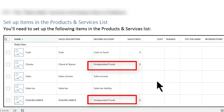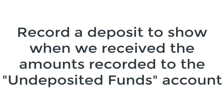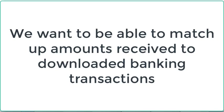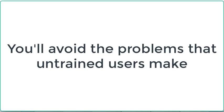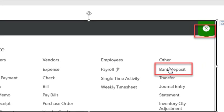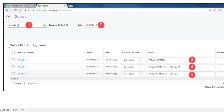That means we have to do an extra — but necessary — step. We need to record a deposit to tell QuickBooks when we actually receive the funds recorded to the undeposited funds account. The main reason is to match up the amounts received to what's shown on our bank statement, so when we go to banking transactions in QBO we'll see those amounts as a match. From QBO, click the plus sign and then click Bank Deposit. When you open the deposit window, you'll see something like this.